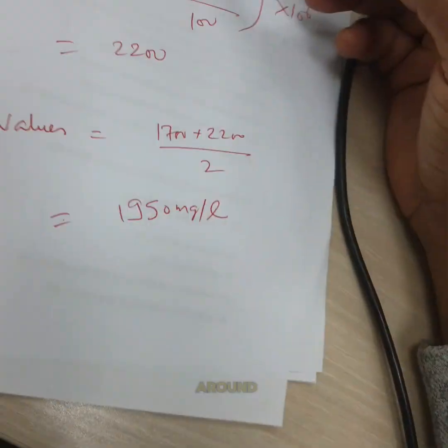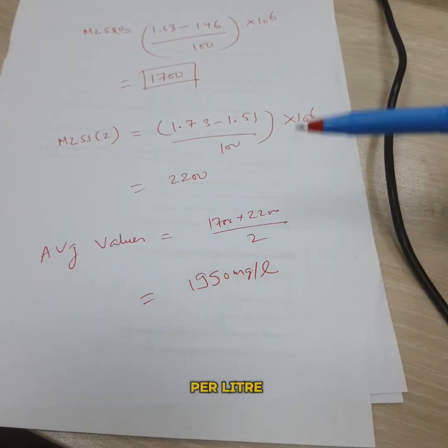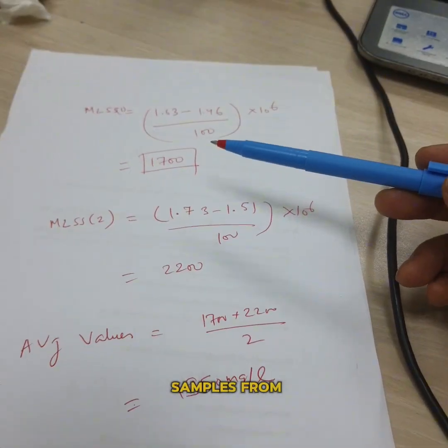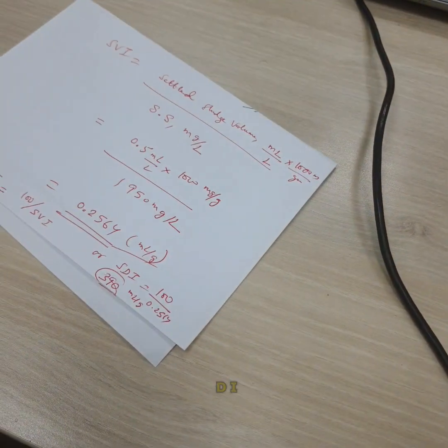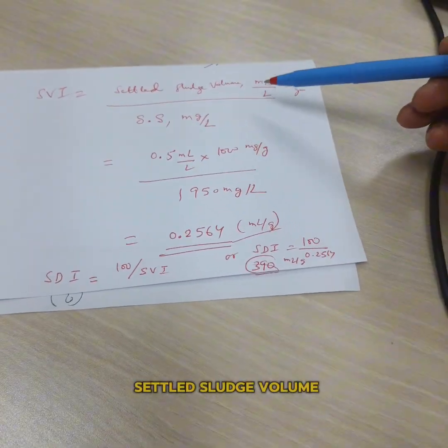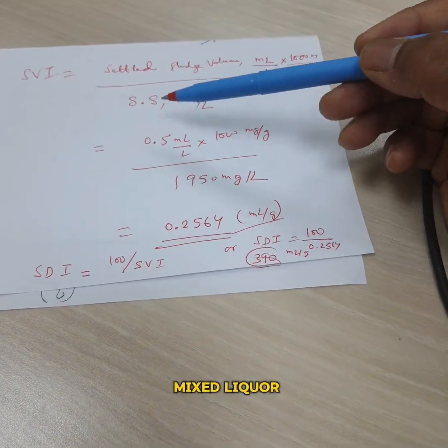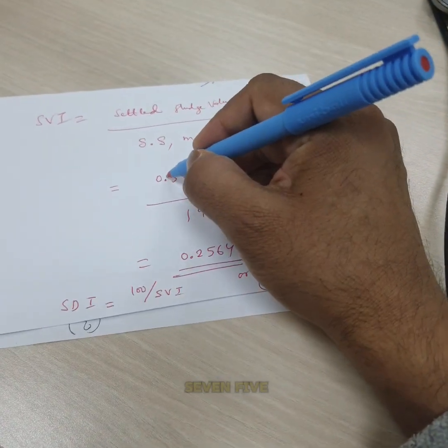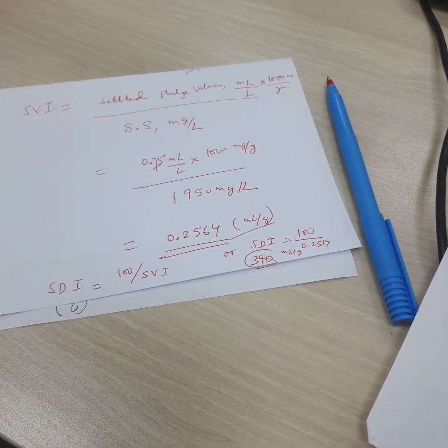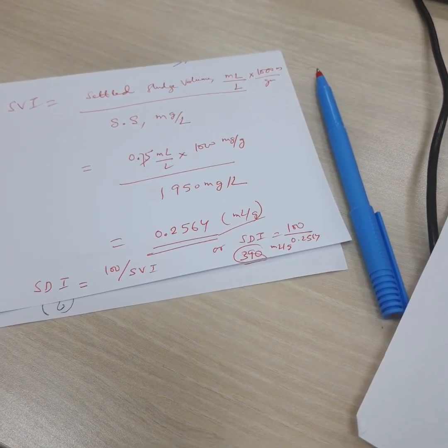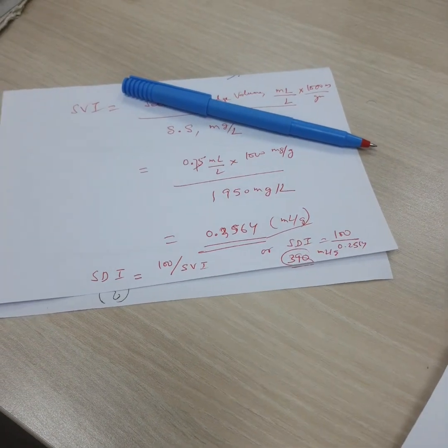Now guys, on calculating the value of SVI and SDI from the experimental result that we got in the lab, MLSS in the first sample was around 1700 milligrams per liter and in case of the second sample it was 2200 milligrams per liter. The average value of both the samples as we took two samples from the same water, so the value is 1950. And our SVI - you know that SVI is the ratio of settled sludge volume times 1000 milligrams per gram upon suspended solids concentration in the water, that is mixed liquor suspended solids. Here even if we take this around as 0.75, for example, the value would be 0.384.